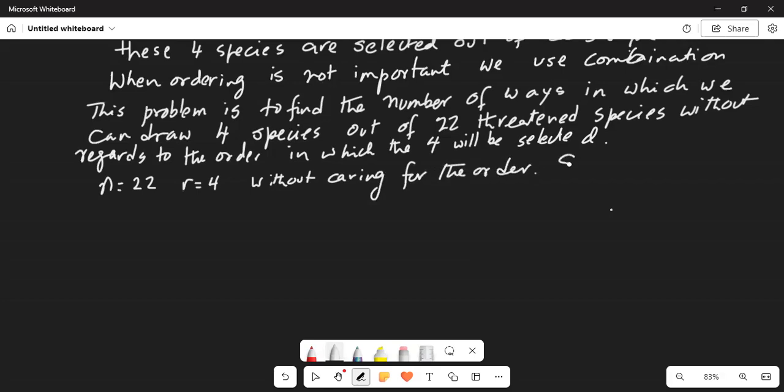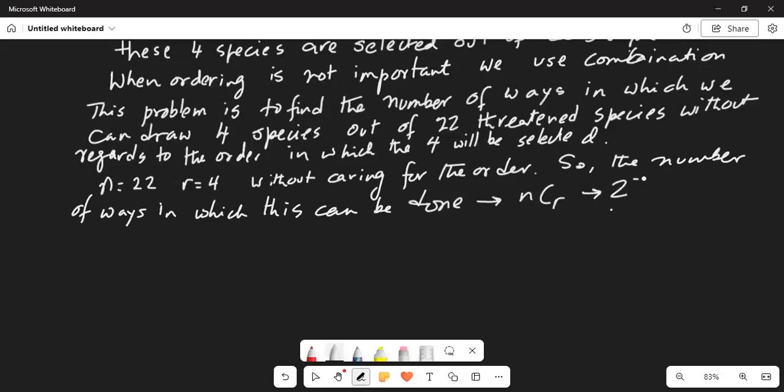So the number of ways in which this can be done is n C r, or in our case it's 22 C 4, that is four items taken from 22 items without regard to order.